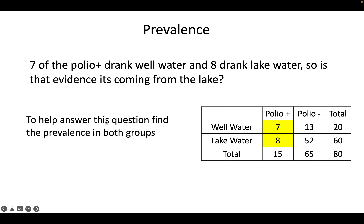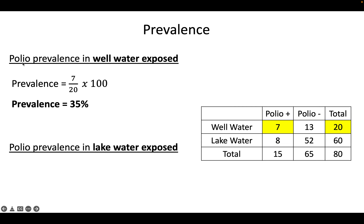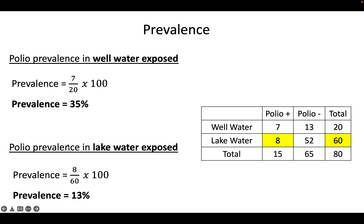We find the prevalence of polio in each group: for well water, seven of the 20 well-water-exposed people got polio, giving a prevalence of 35%. In the lake water group, eight people got polio out of 60 people, giving a prevalence of about 13%. So even though on an absolute scale more people with polio drank lake water, that's just a function of the fact that more people drink lake water overall.